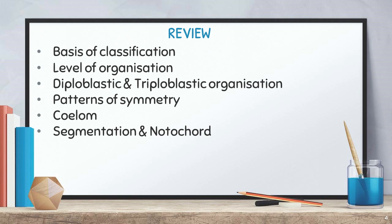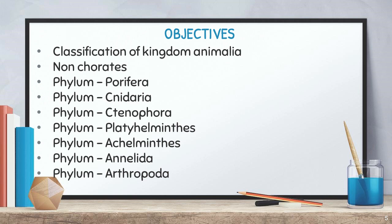This class we are going to discuss Kingdom Animalia. As per the five-kingdom concept, the kingdoms are Monera, Protista, Fungi, Plantae, and Animalia. The ten phyla belonging to Kingdom Animalia are: Porifera, Cnidaria, Ctenophora, Platyhelminthes, Aschelminthes, Annelida, Arthropoda, Mollusca, Echinodermata, Hemichordata, and Chordata.